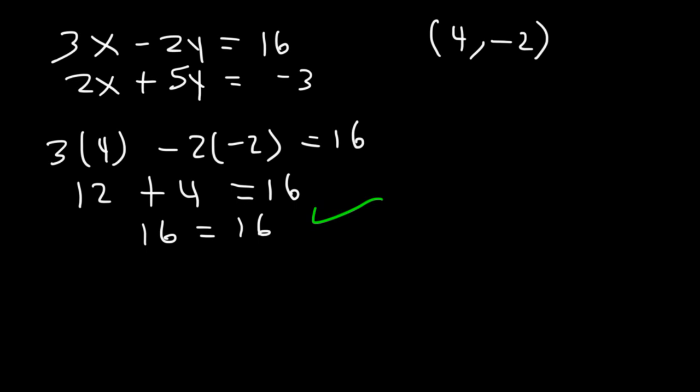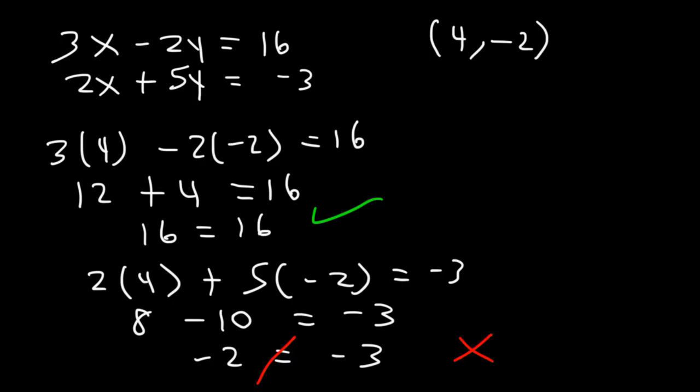Now let's check the second equation. 2 times 4 is 8. 5 times negative 2 is negative 10. 8 minus 10 is negative 2. And negative 2 does not equal negative 3. So therefore, it doesn't work. Which means that (4, -2) is not a solution to these two equations.